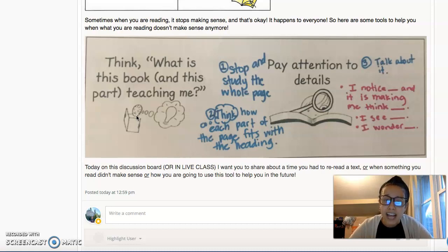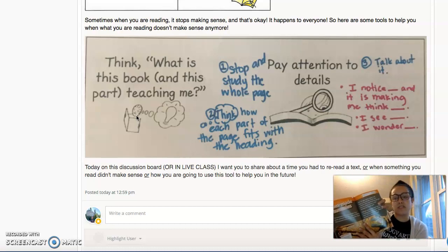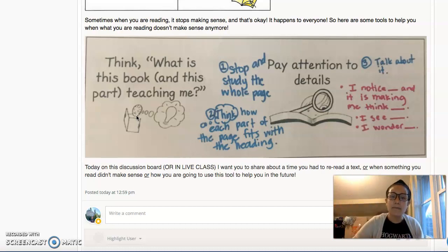So one thing I could do is I could stop and study the whole page. So maybe even though I have the biggest confusion about this paragraph right here, I'm going to go back to this page, the top of it, and I want to start rereading and thinking about maybe what am I missing? They thought spirits might need things in the next life. That's why mummies were sometimes buried with weapons, jewelry, food, or even mummies' favorite pets. Okay.